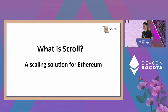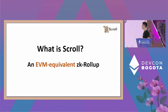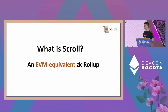Before diving into more detail, for those who are not familiar with who we are: Scroll is a general purpose scaling solution for Ethereum — making Ethereum cheaper and faster with higher throughput. More specifically, we are building an EVM-equivalent ZK rollup, which is considered to be the most secure scaling solution with the shortest finality, based on math.